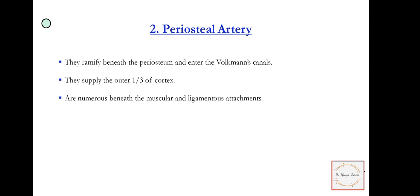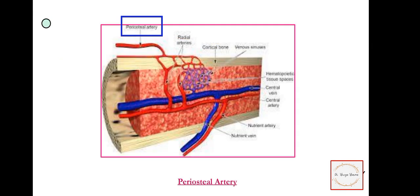Next is the periosteal artery. They ramify beneath the periosteum and enter the Volkmann's canals. They supply the outer one-third of cortex. The inner cortex is supplied by the nutrient artery, whereas the outer one-third of cortex is supplied by the periosteal artery. These are numerous beneath the muscular and ligamentous attachments.